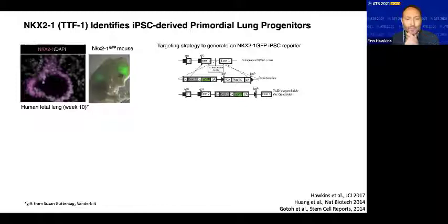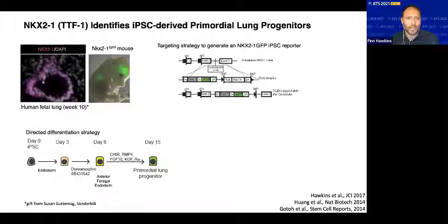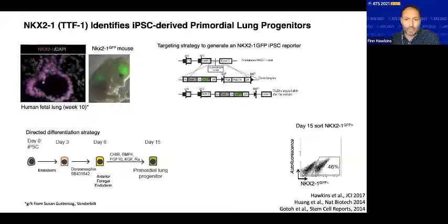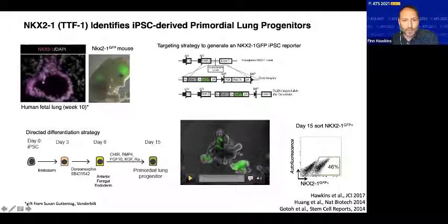Using this fluorescent reporter iPSC line, we differentiated it through three key stages to specify cells towards lung lineage. In the first stage, we differentiate cells towards definitive endoderm using now well-established, highly efficient protocols. The definitive endoderm is then patterned over the following three days towards a more foregut endoderm state by inhibiting TGF-beta and BMP4 signaling. Subsequently, that foregut endoderm is treated with key activators including Wnt, BMP4, and retinoic acid. When we apply this protocol, we see the emergence of cells that express NKX2-1 GFP as demonstrated by flow cytometry.